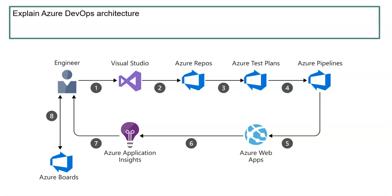Azure Web Apps helps you deploy the application built on Visual Studio so that the testing team, UAT team, or production can use that web application. Azure Application Insights is a feature of Azure Monitoring — it helps you analyze your application's performance continuously, diagnose issues, and understand what users actually do with your app. It is designed to help you continuously improve performance and usability. This covers a basic Azure DevOps architecture for a web application, though there are many architectures involving Kubernetes, Docker, and containers for different environments.